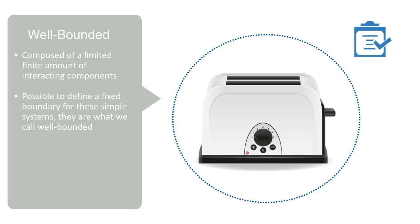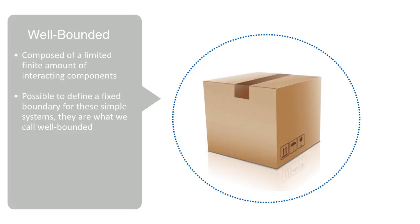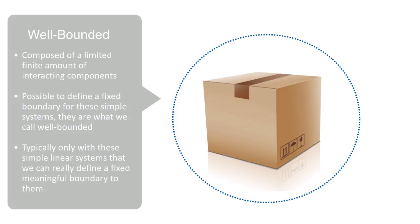They are what we call well-bounded. By this, I mean that we can tell exactly what is part of the system and what is not. We can put our toaster in a box and say that what is in the box is part of the toaster, and what is outside the box is not. This may sound like a trivial observation, but it is certainly not always the case that we can do this. It is typically only with these simple linear systems that we can really define a fixed, meaningful boundary.